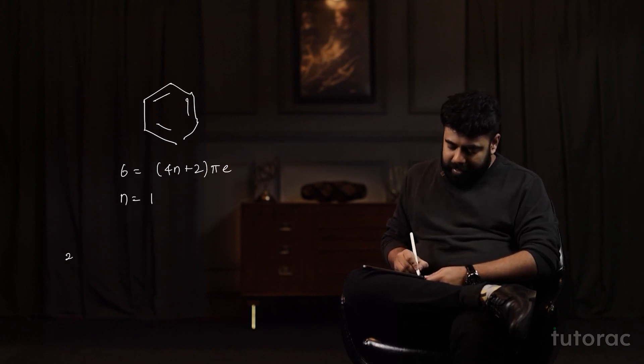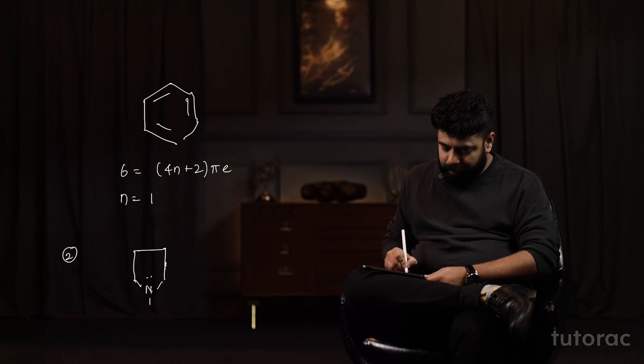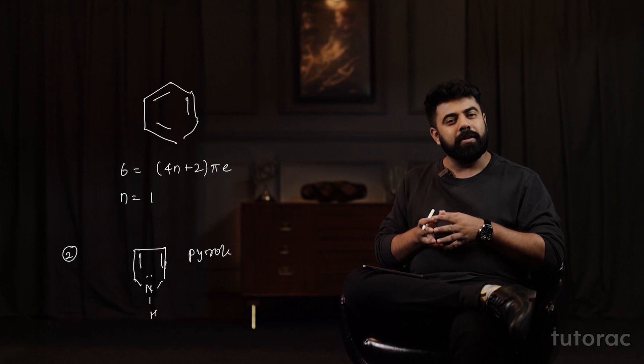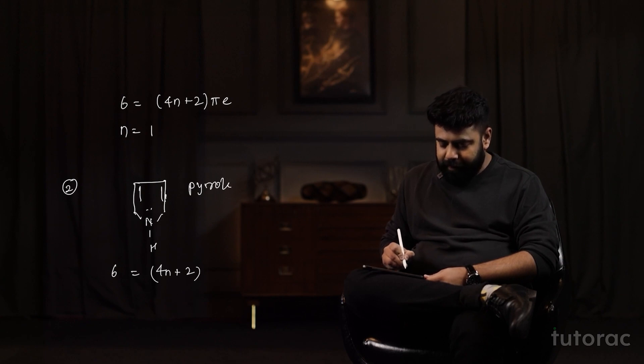Let us take one more example — pyrrole. Pyrrole appears somewhere like this. In the case of pyrrole, there are in total 2 pi bonds, which means 4 pi electrons, plus there is a lone pair as well, which means in total we have 6 pi electrons. This should be equal to 4n + 2. When I substitute this, the value of n comes out to be 1, which confirms that pyrrole is also an aromatic compound.